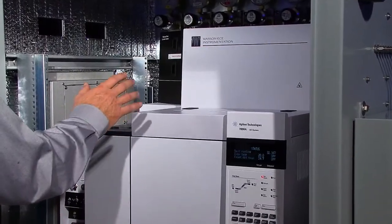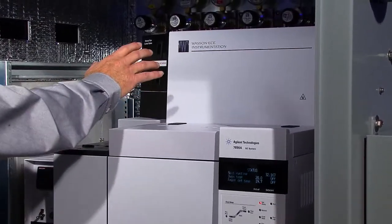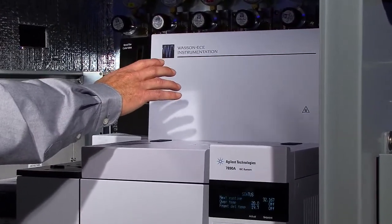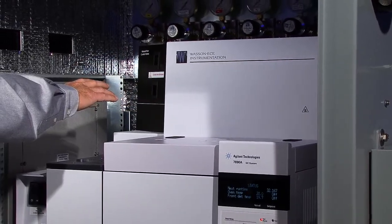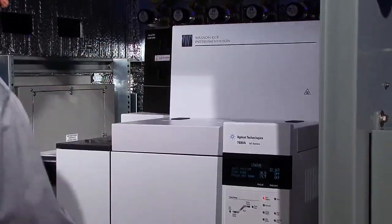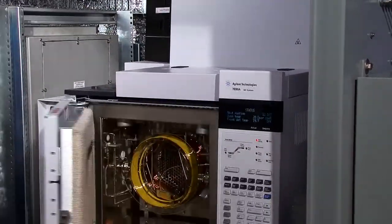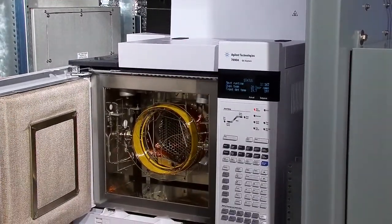Wasson ECE modifies the 7890 concept to include a second isothermal oven for valves and columns. Additional flow capability is housed in a side module. The main oven contains capillary columns and additional valves.